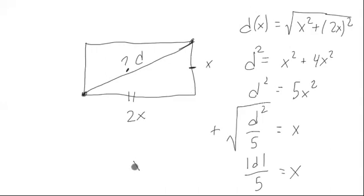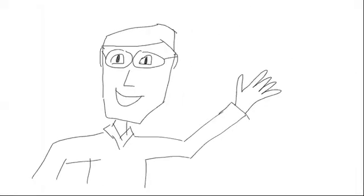So we know that x is simply going to be, oh that's a square root of 5, excuse me, square root of 5 is going to be d over square root of 5. And there's our function right there. Thanks for watching.